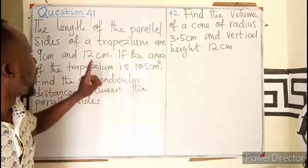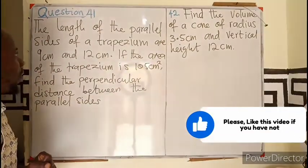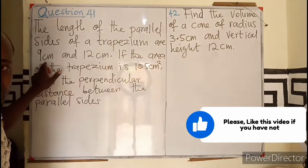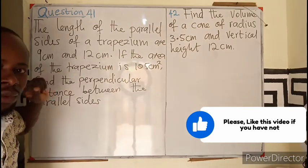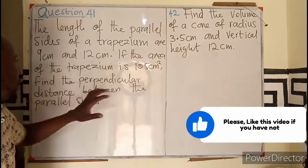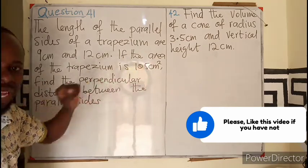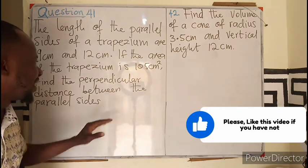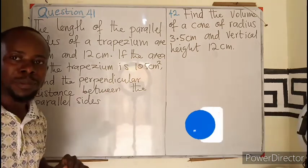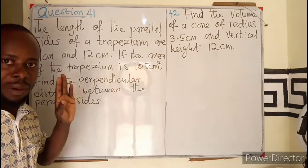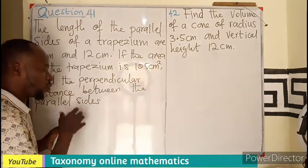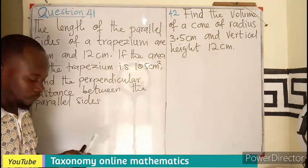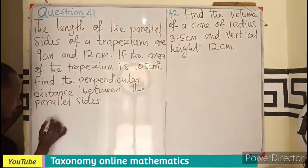Number 41. The length of the parallel sides of a trapezium are given as 9 cm and 12 cm. If the area of the trapezium is 105, we have to find the perpendicular distance between the parallel sides. So the first thing we need to do is to put up the diagram to represent our trapezium.